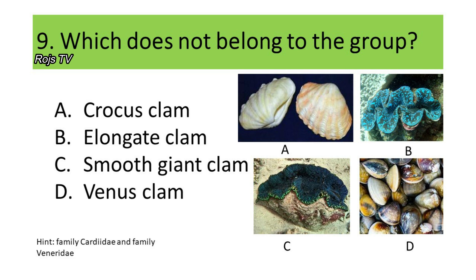These four organisms fall under family Cardiidae or family Veneridae. If your answer is Venus Clam, you are correct. Venus clams fall under family Veneridae, while the giant clams fall under family Cardiidae.